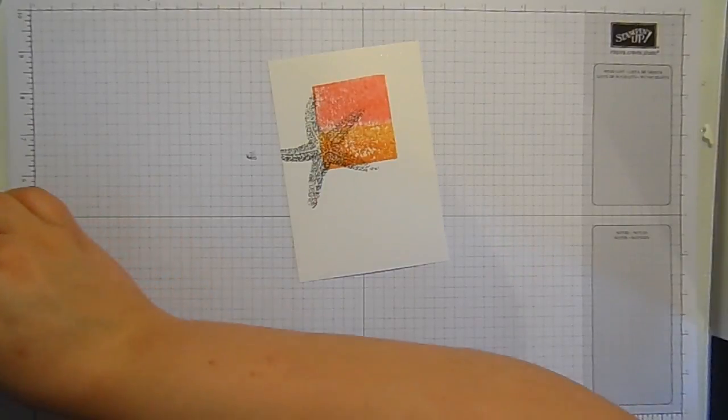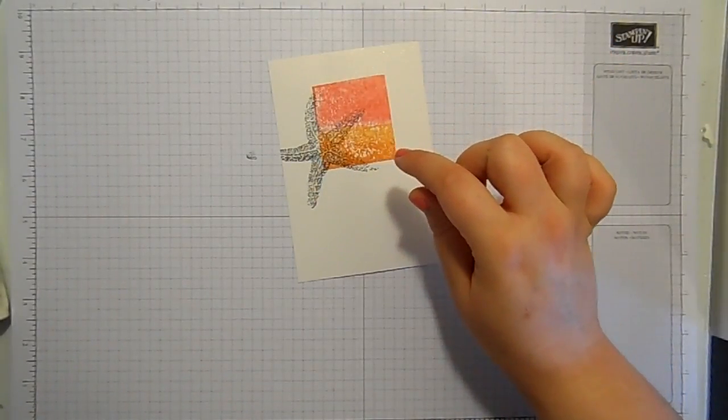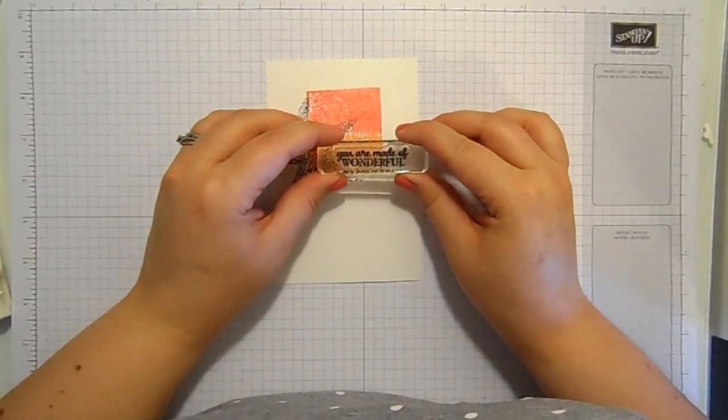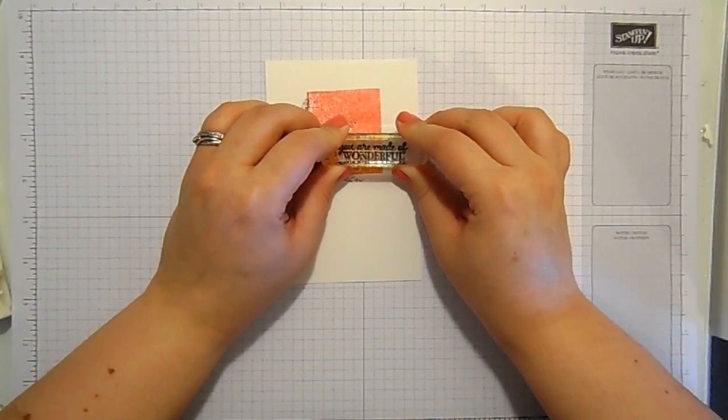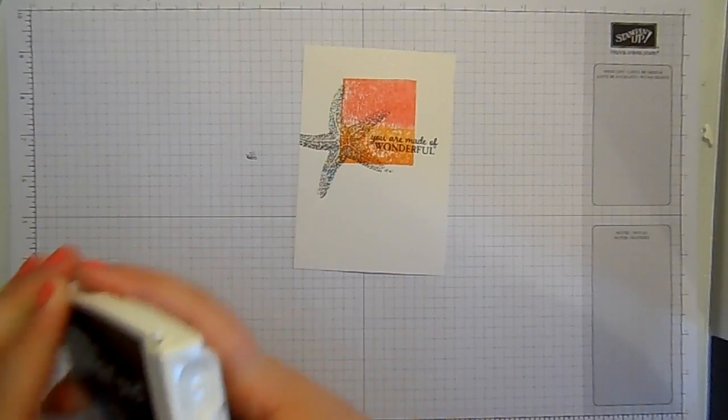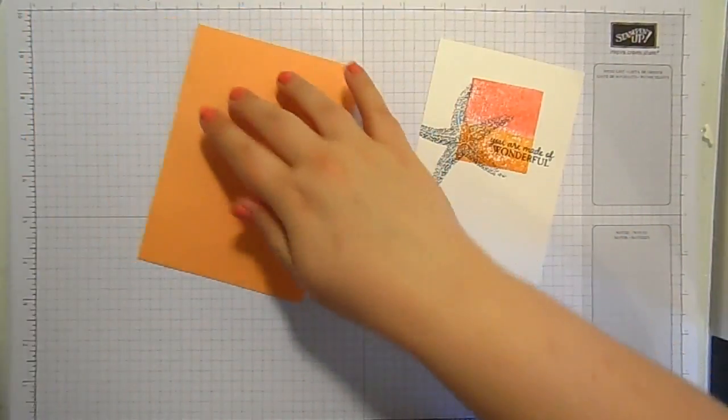And I'm going to ink the sentiment up in the same. And even if this is still a bit wet, this ink won't move because it is water resistant. So it will still give you a perfectly stamped image. Not like soaking, soaking wet, but if it's a little bit damp.